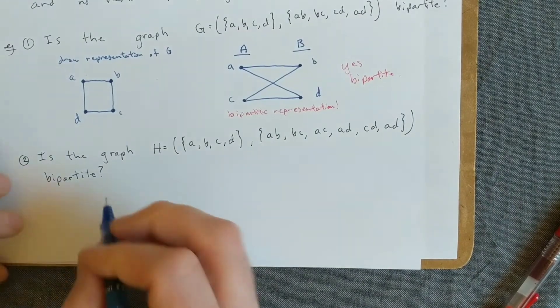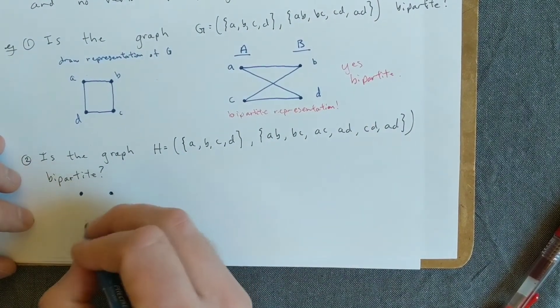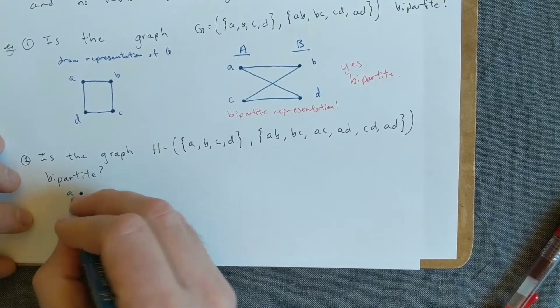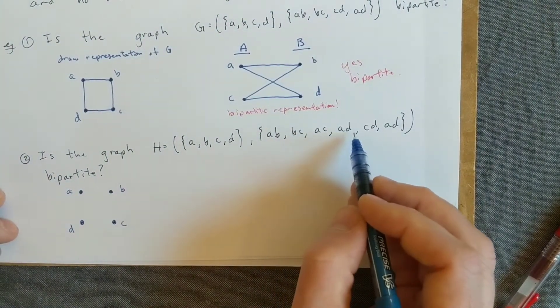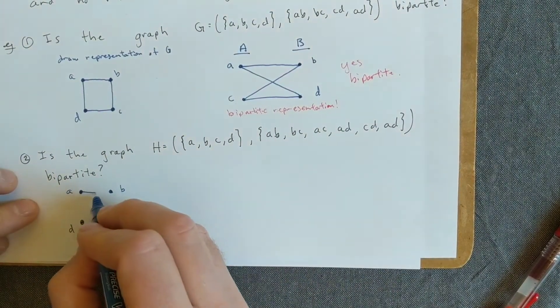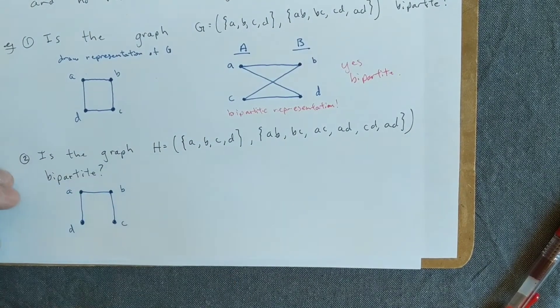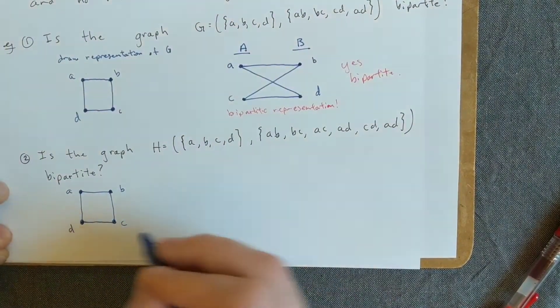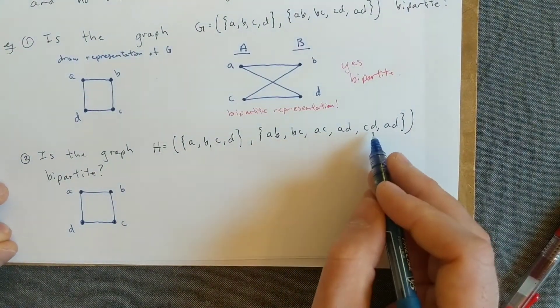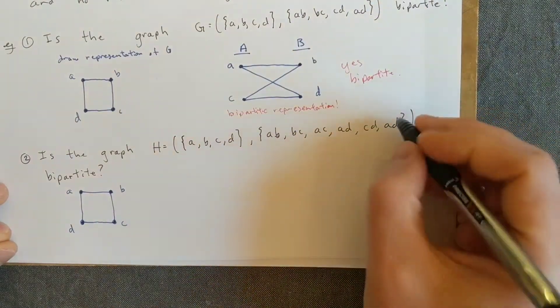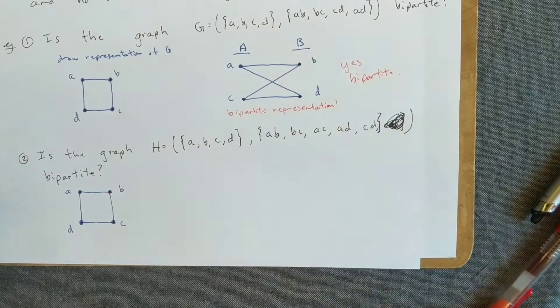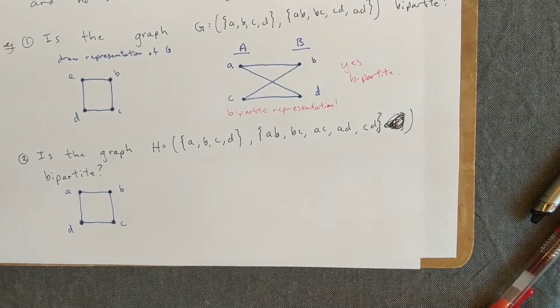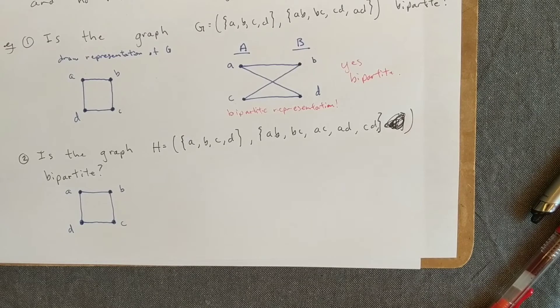So let's look at H. The same four vertices A, B, C, D. So let's draw this the same way. I still have A to B, B to C, A to D, and C to D, just like before. Oh yeah, I wrote A to D twice, let me get rid of this. Okay, and now I have AC, right? So it turns out that this is not bipartite. Let's see why.